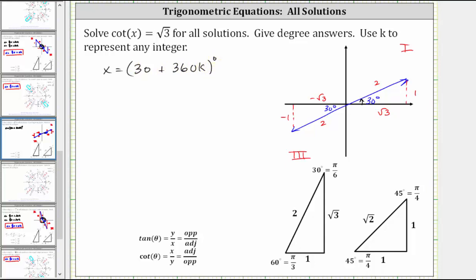Now let's focus on the least positive angle in the third quadrant, which is 180 degrees plus 30 degrees, or 210 degrees. This gives us x equals 210. And then for all the coterminal angles, we add 360k, and the units would be degrees.